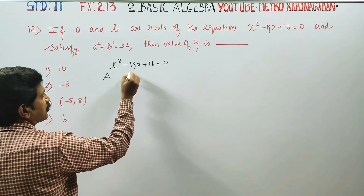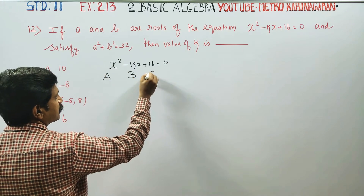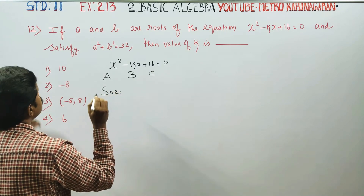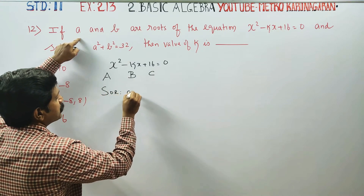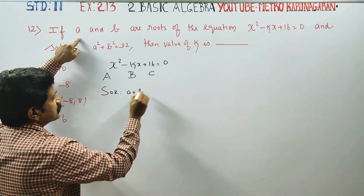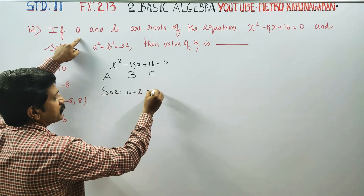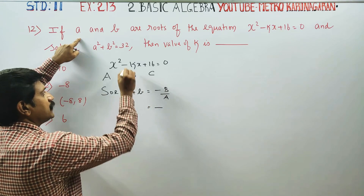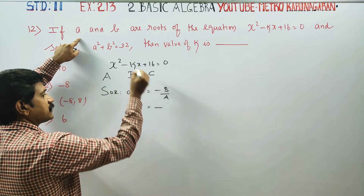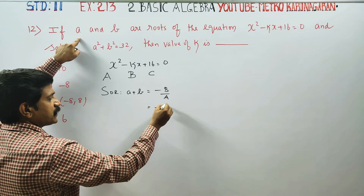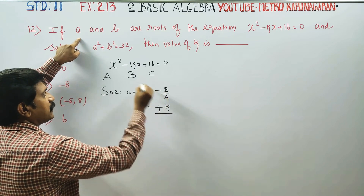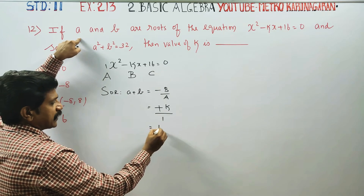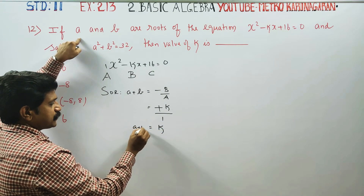Here, the coefficient of x² is 1, and A and B are the roots. The sum of the roots, A plus B, is given by the formula -B/A, which equals -(-k)/1 = k. Therefore, A plus B equals k.